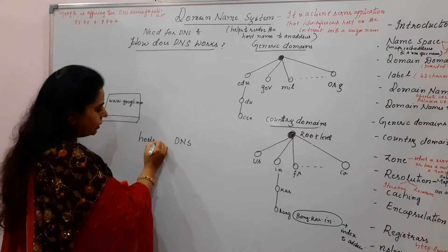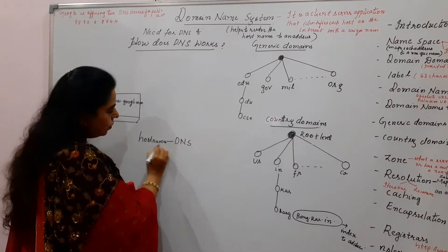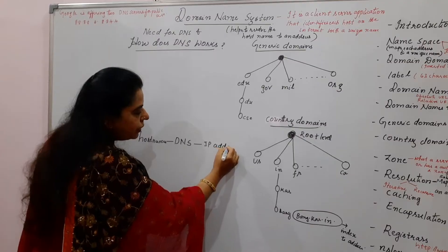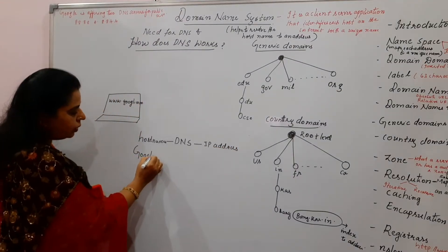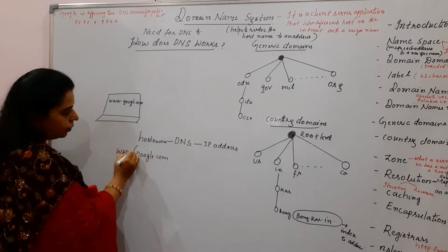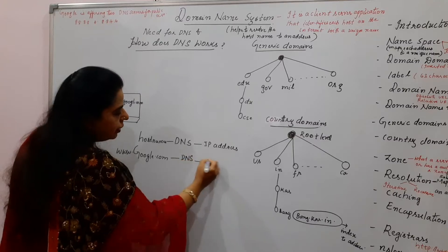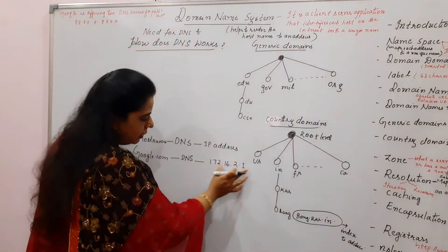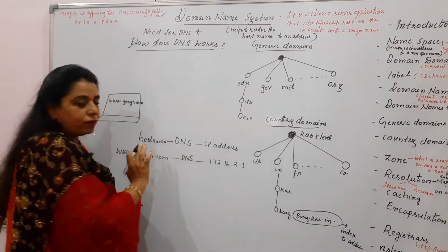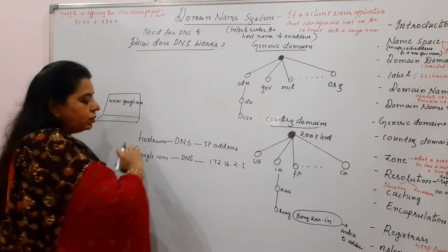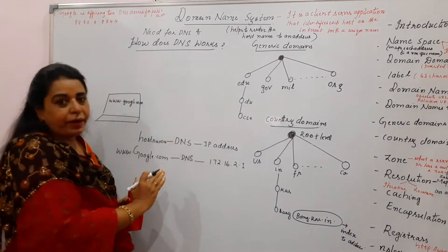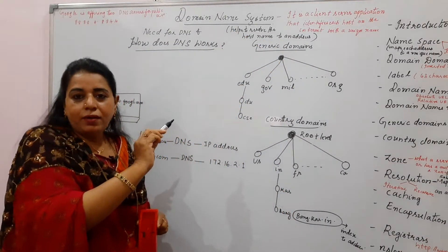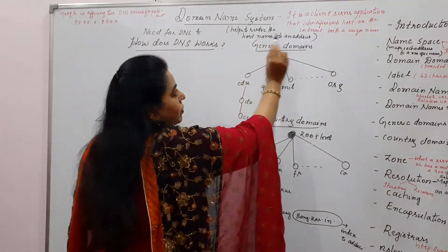The host names are typed on your system, but these host names cannot be understood by the system. What DNS will do is it will convert — or translate — the hostname into its IP address. For example, if you are typing www.google.com, what DNS will do is translate this and give its IP address, say 172.16.2.1 — just assume that this is the IP address of the host name typed by the user. So this conversion is required from the host name to the IP address. DNS helps to resolve the host name to an address — that is the definition.